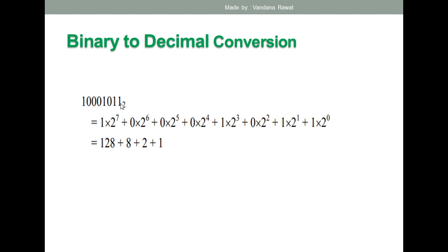We apply the same process: start multiplying from the LSB. So it will be 1 × 2⁰, then 1 × 2¹, then 0 × 2², then 1 × 2³, then 0 × 2⁴, 0 × 2⁵, 0 × 2⁶, and 1 × 2⁷. Multiplying these gives 128 + 8 + 2 + 1.